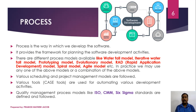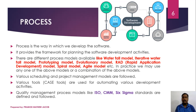Various scheduling and project management models are followed. For scheduling, we use Gantt charts, PERT charts, or WBS (Work Breakdown Structure) — we will learn about all scheduling tasks in our next sessions. There may also be CASE tools (Computer-Aided Software Engineering tools) that automate various development activities, so we must choose which CASE tools are to be used in our software development.